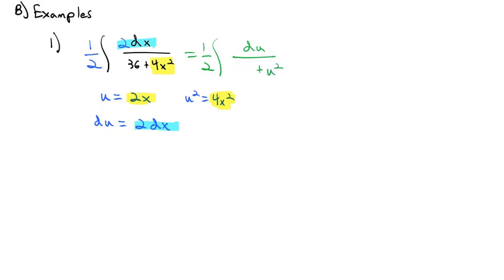In fact, we can even rewrite that 36 as 6 squared, so that it's in that tangent format. So as we take this integral, we've got the 1 half out front times, using our tangent formula. Tangent says we're going to take 1 over the a term, so 1 over 6 tangent inverse of u divided by the a term of 6 plus a constant.